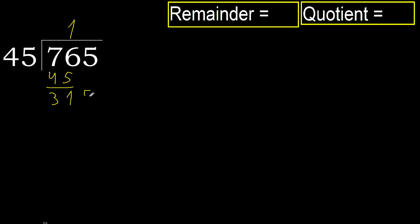Next. Bring down: 315. 45 multiplied by 9 is 405, which is greater. 45 multiplied by 8 is also greater. 45 multiplied by 7 is 315, which is not greater — ok.